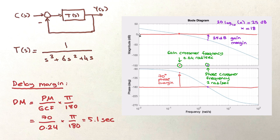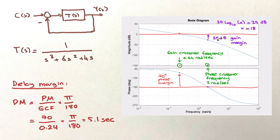When the magnitude plot hits zero decibels, we call that frequency the gain crossover frequency — in this case 0.24 radians per second. We then calculate the phase margin: we have 70 degrees of phase margin, meaning we are 70 degrees away from the minus 180 degree angle. Likewise, we look at where the phase plot hits minus 180 degrees — here at 2 radians per second — which we call the phase crossover frequency. At that frequency, we are below the zero decibel line by 25 decibels, so we have a gain margin of 25 decibels.